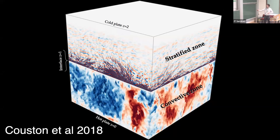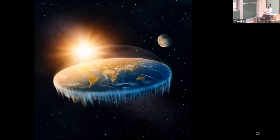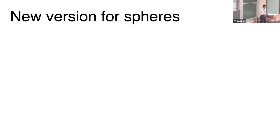Most of those 200 papers run simulations in Cartesian geometry. Here's one I was part of: a simulation of convection in a lower layer with a stably stratified layer above generating waves. But we wanted to solve other problems. Cartesian geometry is great for studying the Earth — which we know is flat — but if you look outside Earth, you see things like the Moon that are spherical, so we needed to run simulations in spherical geometry.